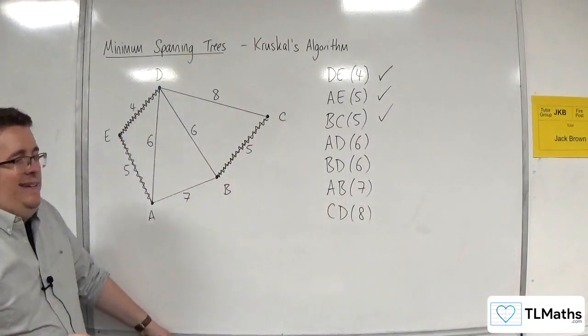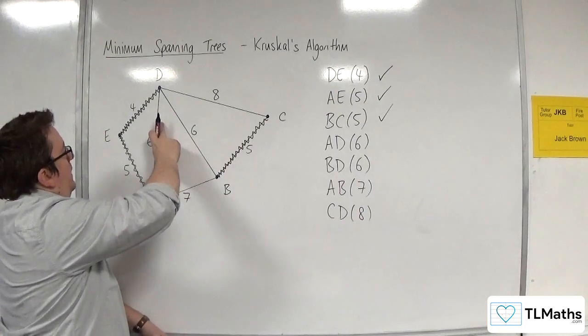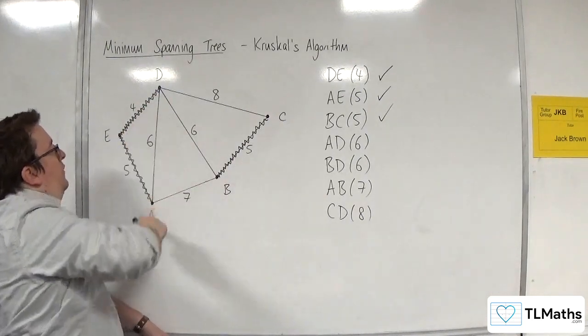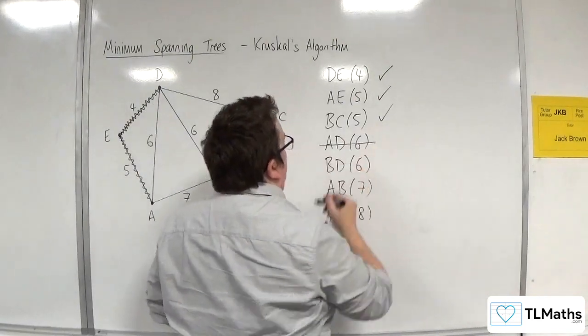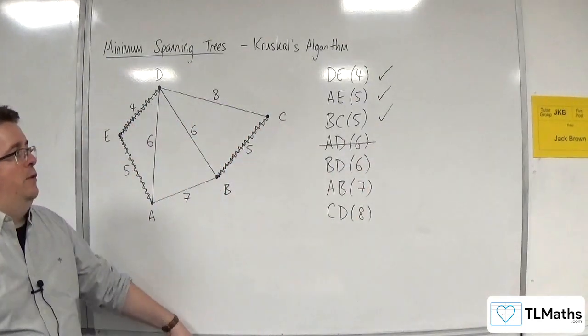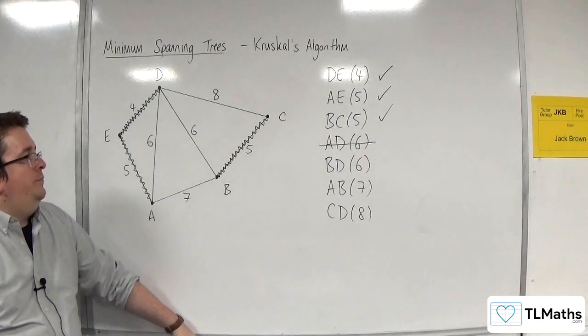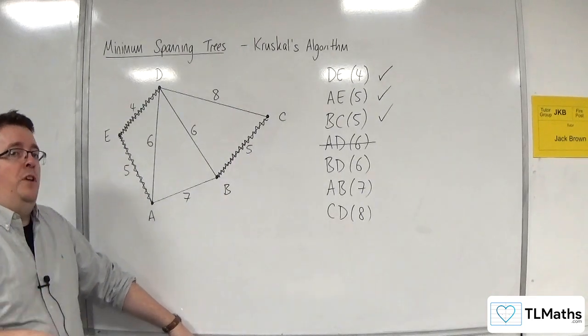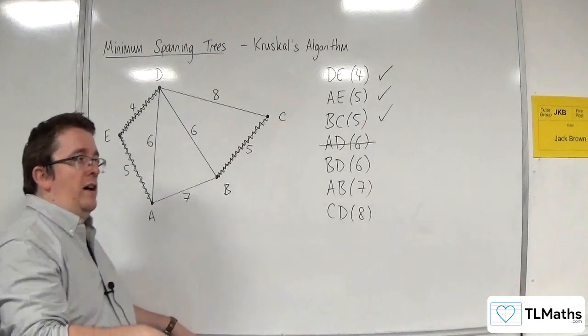Right, then I've got AD of 6. Now, AD is this one. But that would create a cycle. So I don't want AD. Can't have that one. So I'm going to put a line through it. So a single line to go through it and just say, right, I don't want that one. I think that's better than you just putting a cross next to it. So it makes it clearer that you are discarding that one.